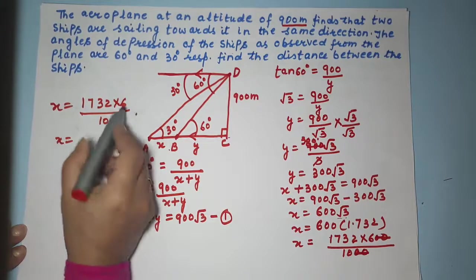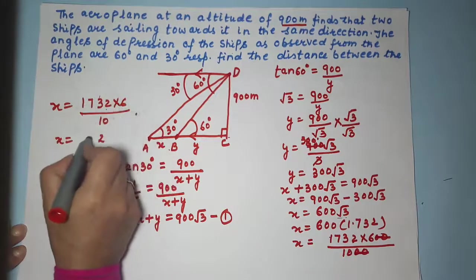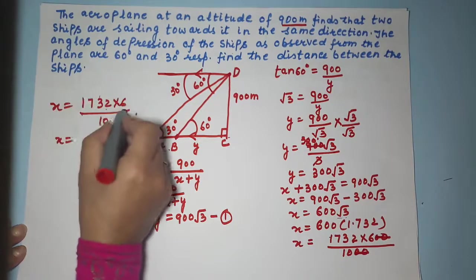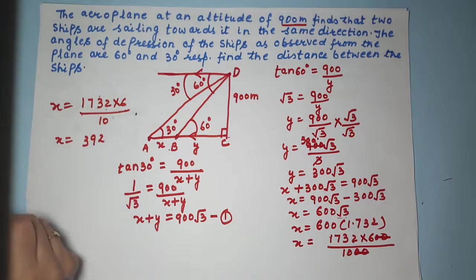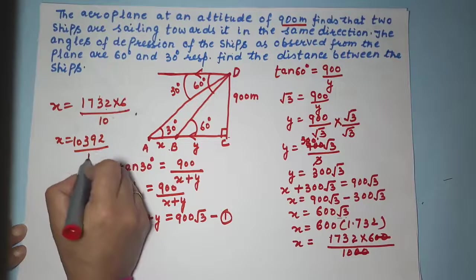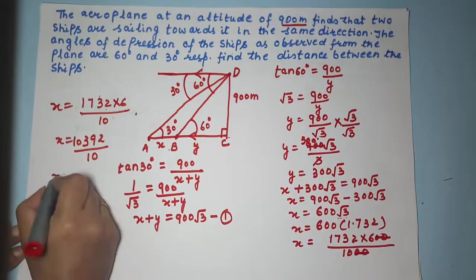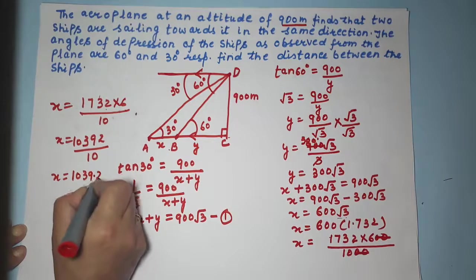So my X is equal to 6 into 2 is 12, 1 carry. 6 into 3 is 18 and 1 is 19, 1 carry. 6 into 7 is 42 and 1 is 43, 4 carry. 6 into 1 is 6 and 4 is 10. So finally my X is equal to 1039.2 meters.